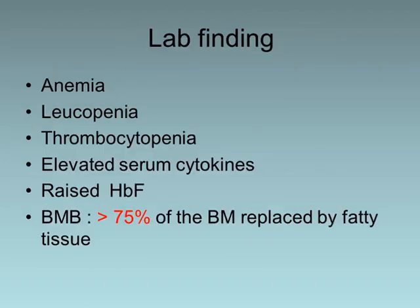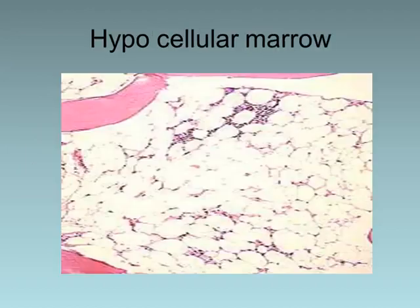Lab findings include anemia with low hemoglobin, low white cell count, and low platelet, with elevated cytokines and raised hemoglobin F. Bone marrow biopsy reveals that more than 75% of the marrow is replaced by fatty tissue. The bone marrow slide shown is hypocellular — the white areas are fatty tissue, while the cellular elements, appearing blue or purple, are very low, less than 25%.